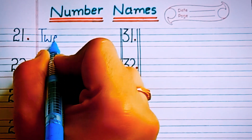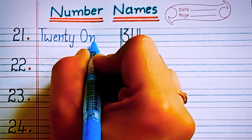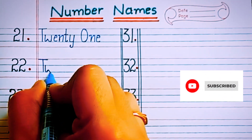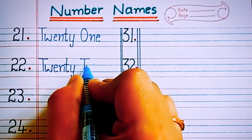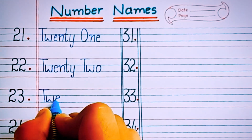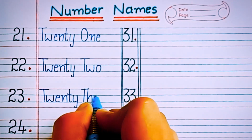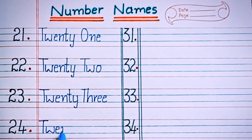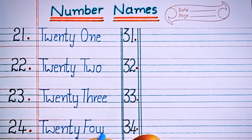T-W-E-N-T-Y O-N-E, 21. T-W-E-N-T-Y T-W-O, 22. T-W-E-N-T-Y T-H-R-E-E, 23.